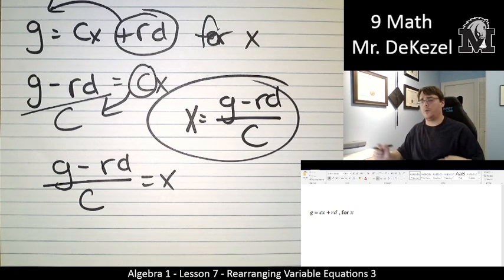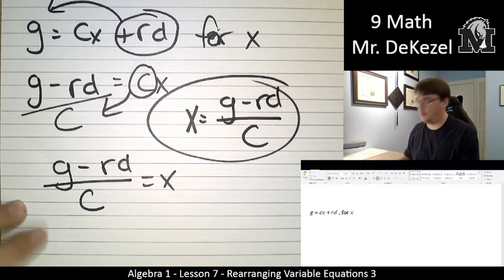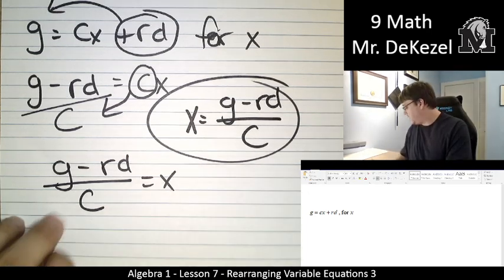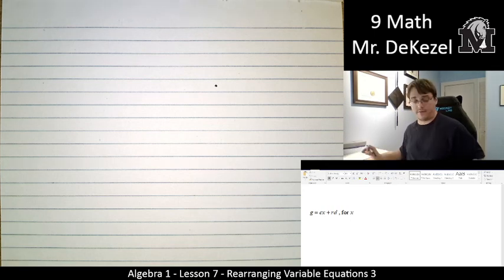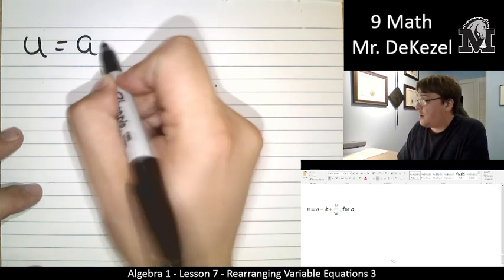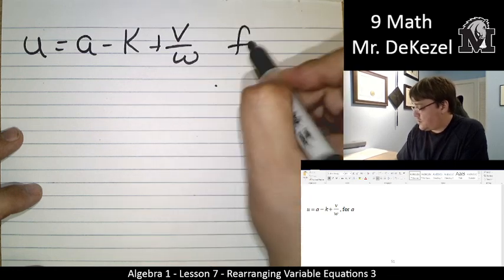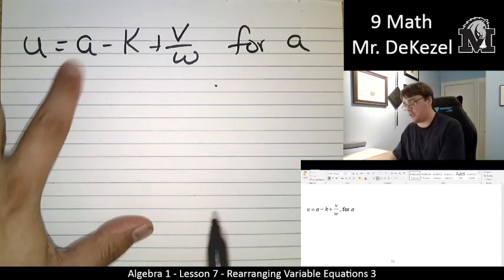And so a few more variables, a little bit more moving around, but nothing more complicated really than we did last time when we switched the bottom and the top of opposing parts of the fractions. Let's do the next one. u is equal to a minus k plus v over w. And we're solving in this case for a. So that's right here.